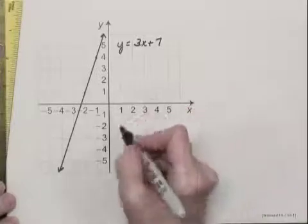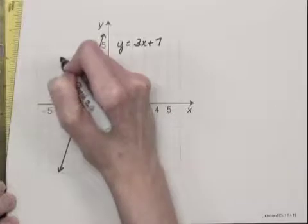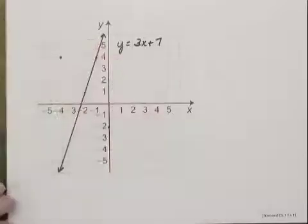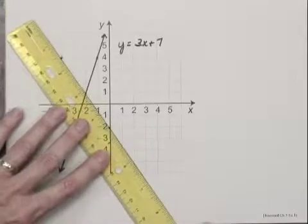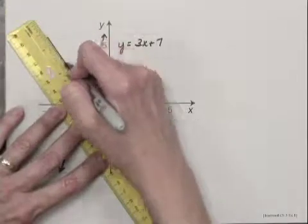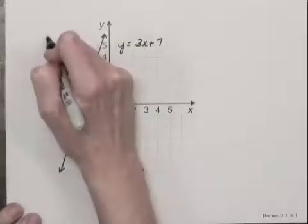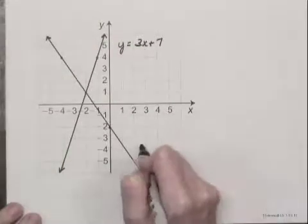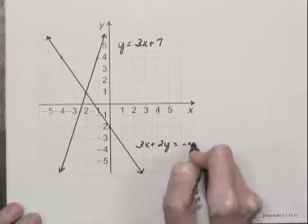For the second equation, we have point negative 2, and another point on that graph is negative 4, 4. Let's draw that graph. This is the graph of 3x plus 2y equals negative 4.